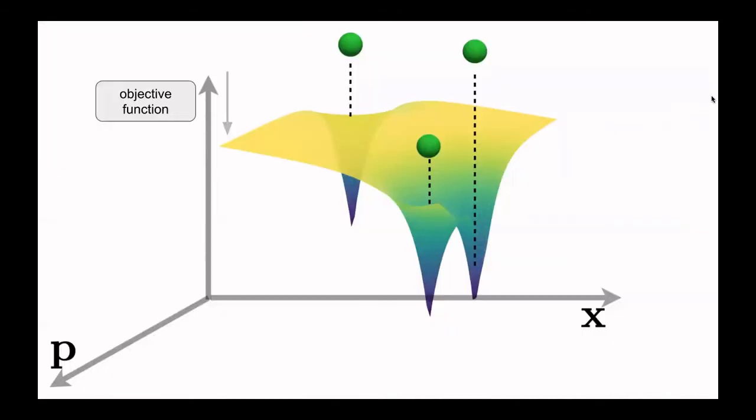GP CAM is based on getting a posterior probability density function after some data was measured, and then using this posterior probability density function to place measurements. In the simplest case, this is done by placing measurements where the uncertainty is maximum, and this is what we see in this little animation.